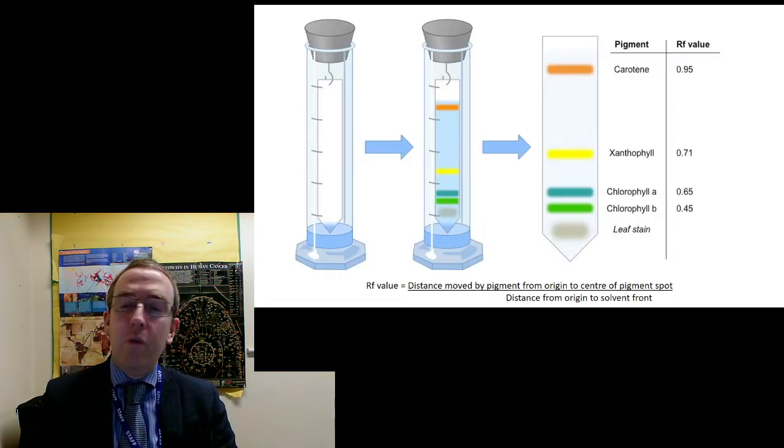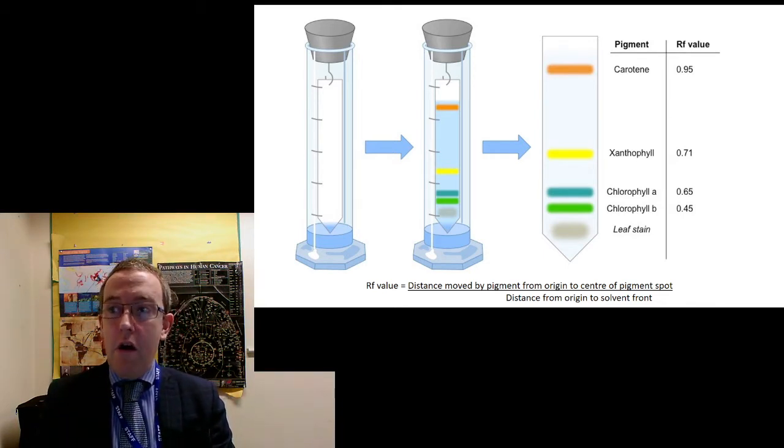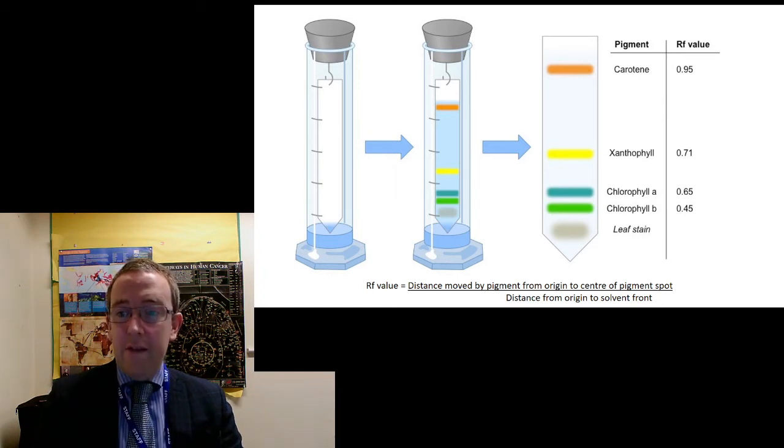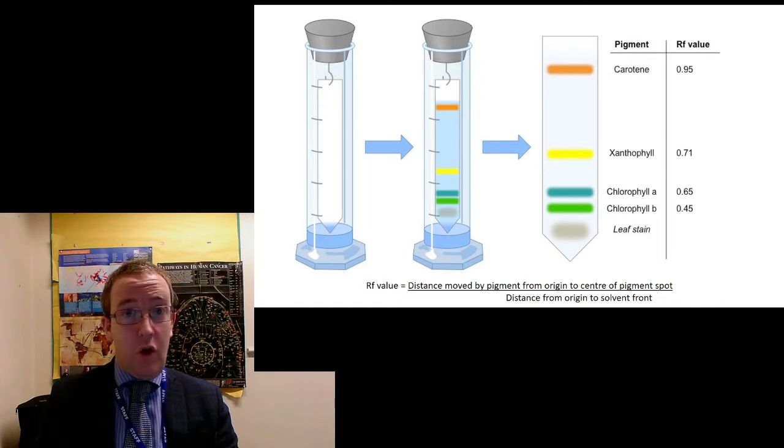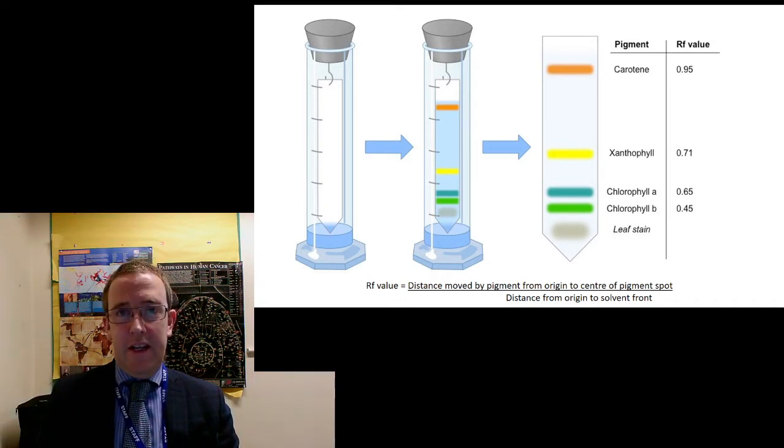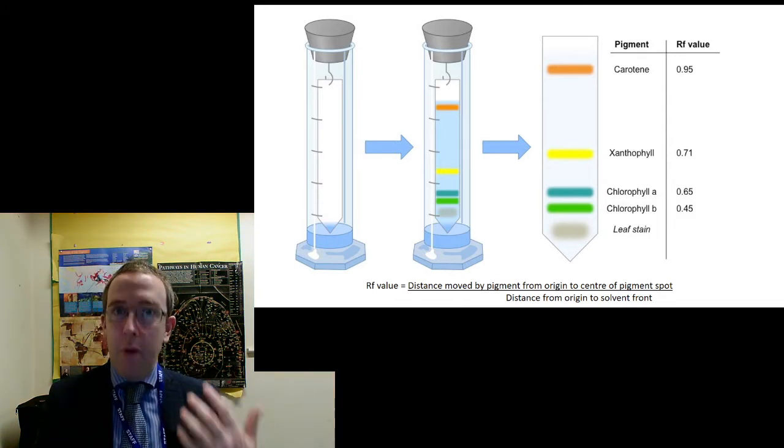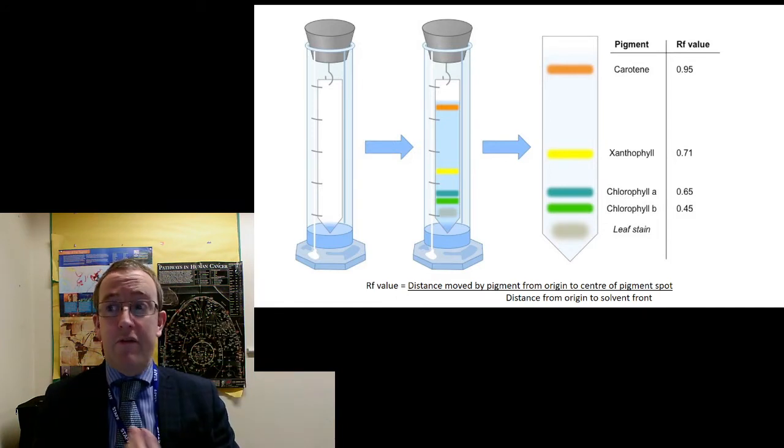So this is sort of typical that you get here afterwards. You'll get a separation of pigments. The RF value is simply a ratio of where the solvent front got to and where the individual pigment got to. That's really important that you draw that on the minute you take a bit of paper out, because the solvent will evaporate and you won't be able to see it. It also allows for, and this is an exam answer, it allows for a comparison between different chromatography papers, different chromatograms, where the solvent ran a different distance. And here are some typical RF values.